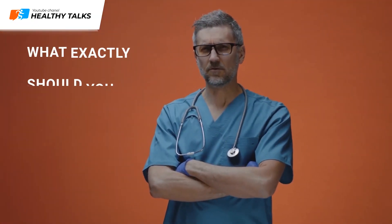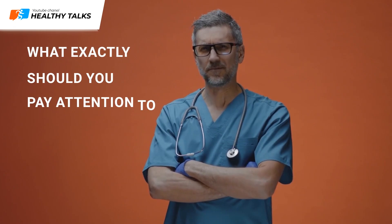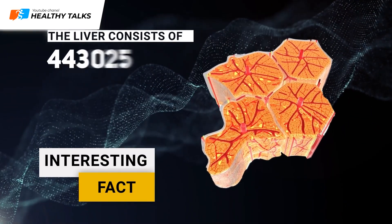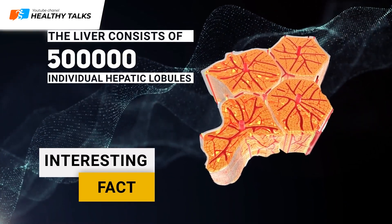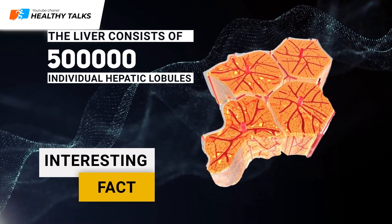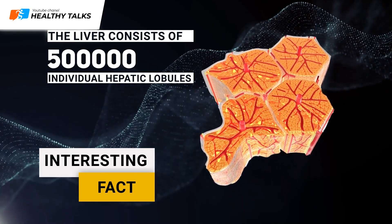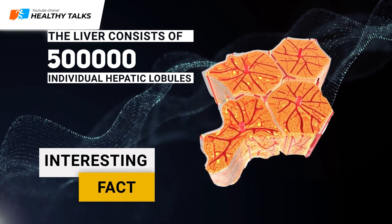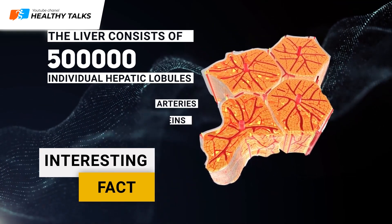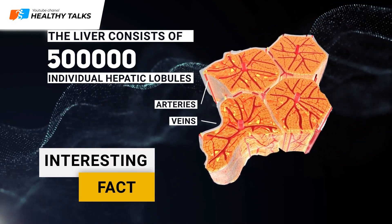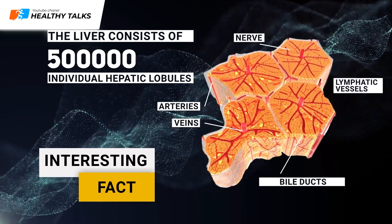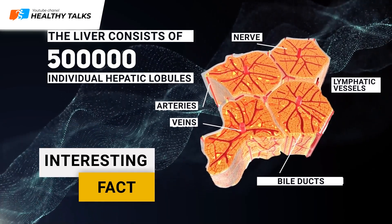In this video we will tell you what exactly you should pay attention to. The liver consists of 500,000 individual liver lobules which can only be seen through a microscope. Each lobule is permeated with arteries, veins, bile ducts, nerves, and lymphatic vessels.